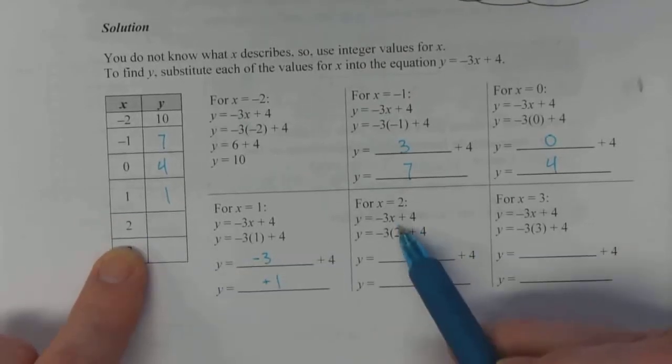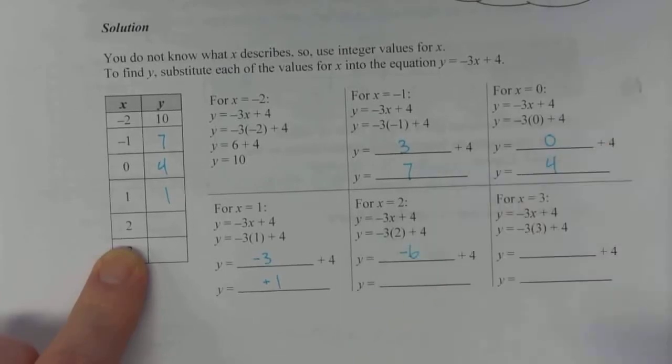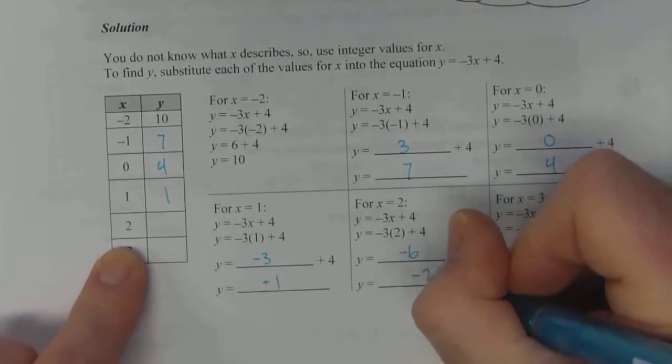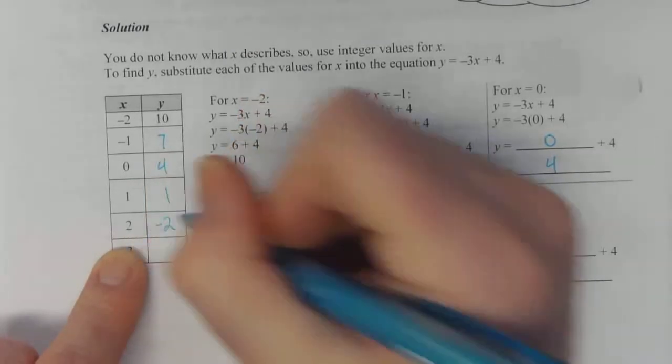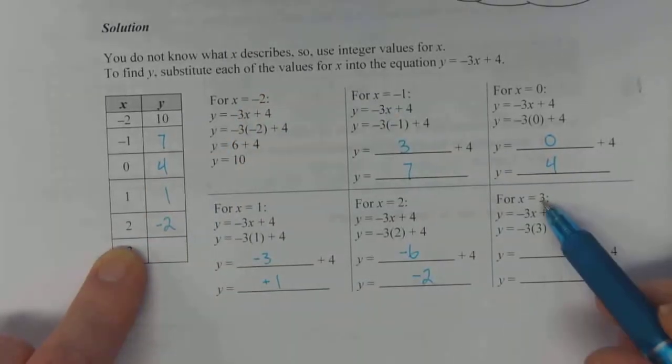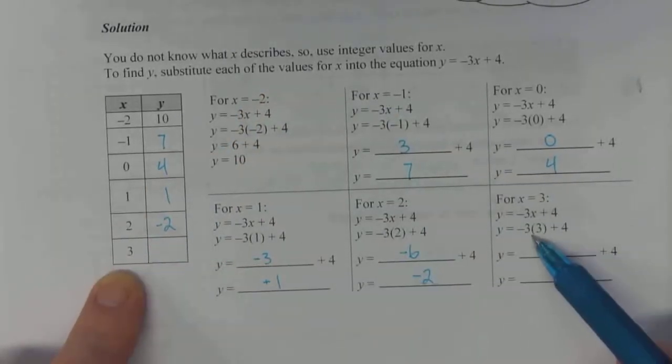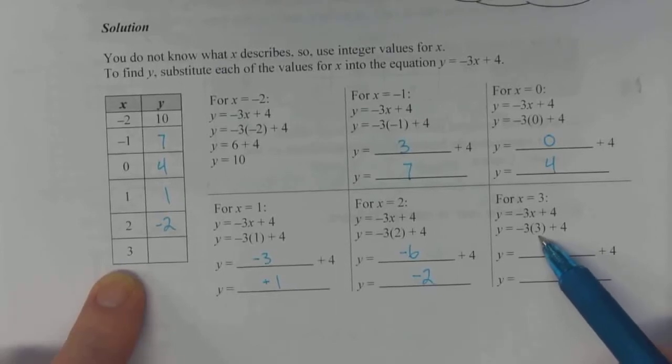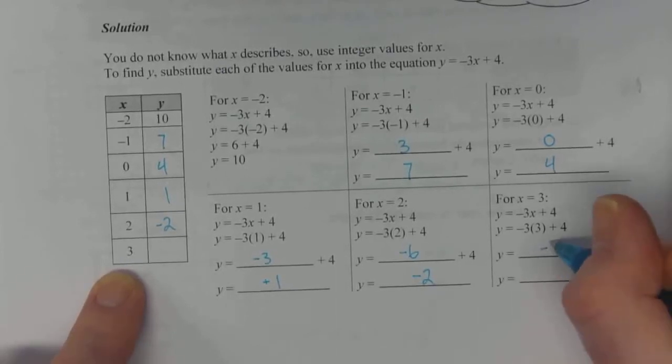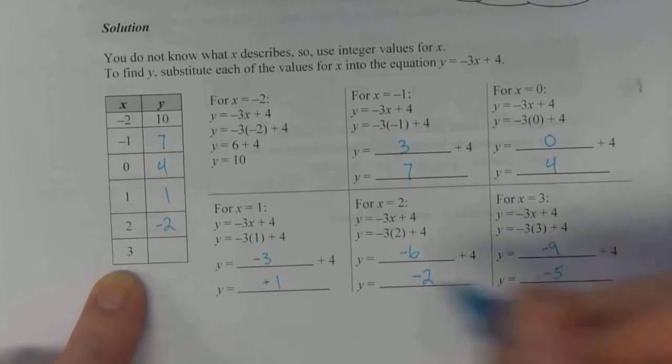Test for 2. Substitute in 2 for x. Negative 3 times 2 is negative 6. Plus 4, you're going to end up with negative 2. And then for x equals 3. Substitute it in. Negative 3 times 3 is negative 9. Add 4 to that, and you end up with negative 5.